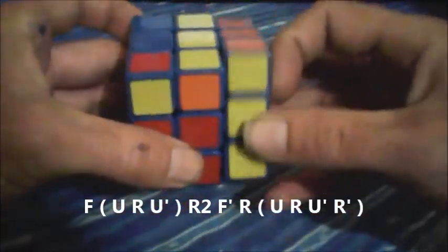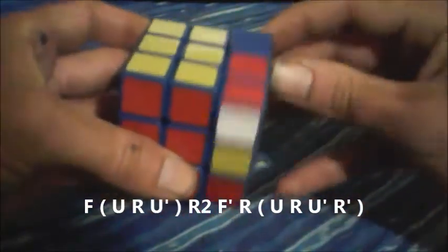And one more time, front, U, R, U prime, R2, F prime, R, U, R, U prime, R prime.